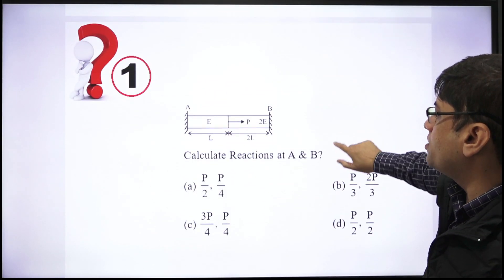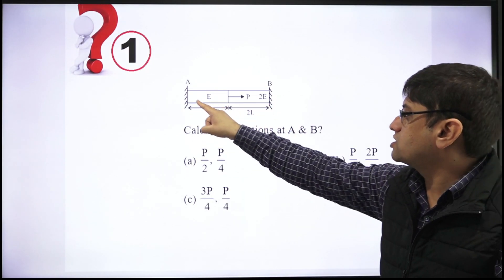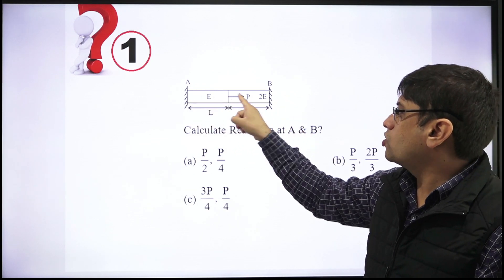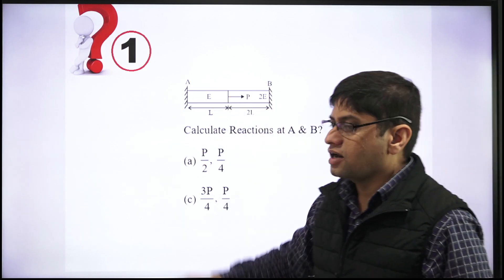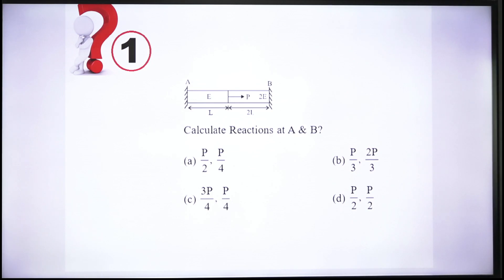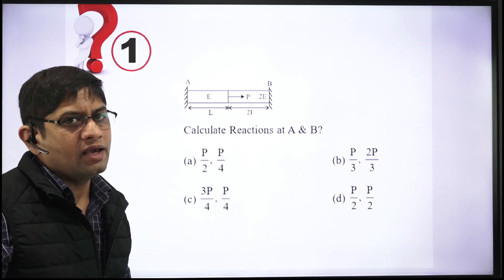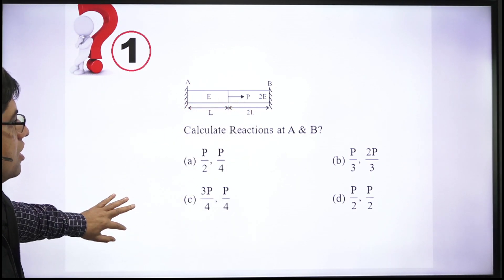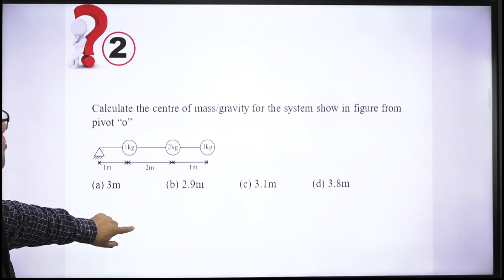These ten questions—you solve these questions. Detailed solution, as I told you, will be on Nimbus. Let's start with the questions. First question: A sectional bar is given to us. You have to find out reaction at A and B. Modulus of elasticity for sections and payload P, length L and 2L are given. You have to tell what is the reactions at A and B. We have already done this kind of question in the previous video, so you need to tell what is the concept here.